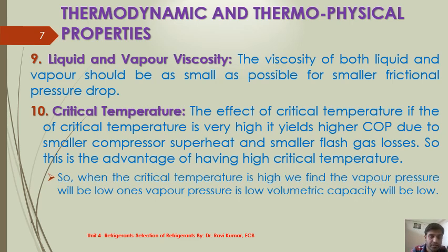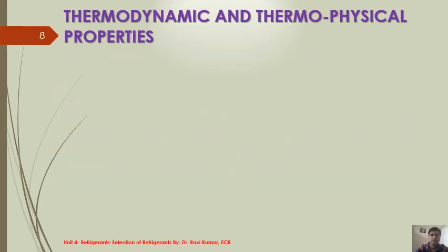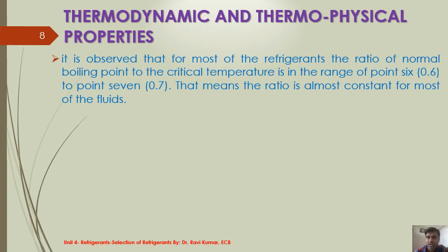When the critical temperature is high, the vapor pressure will be low and the volumetric capacity will be low. It is observed that for most refrigerants, the ratio of normal boiling point to critical temperature is in the range of 0.6 to 0.7, meaning this ratio is almost constant for most fluids. So high critical temperature gives higher COP but lower volumetric capacity — again, a trade-off between high COP and high volumetric capacity.